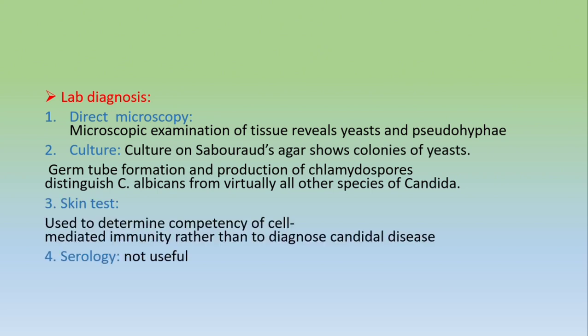Lab diagnosis of Candida: Direct microscopy — look for yeast cells and hyphae. Culture — observe yeast colonies. Key differentiating point: germ tube formation and production of chlamydospores distinguish Candida albicans from virtually all other Candida species — only Candida albicans produces germ tubes in culture. Skin test is used to determine competence of cell-mediated immunity rather than to diagnose candidal disease, and is not very useful. Serology is also not useful.